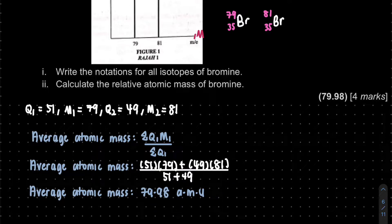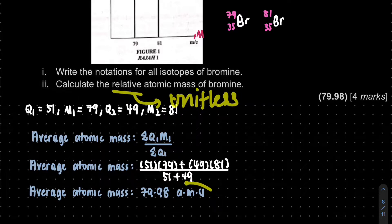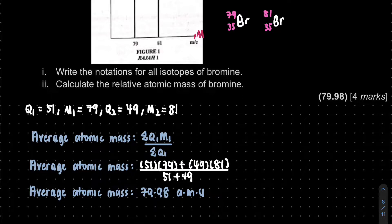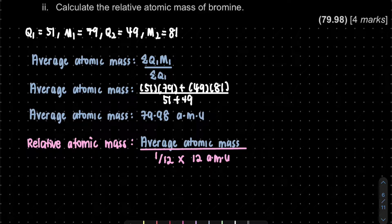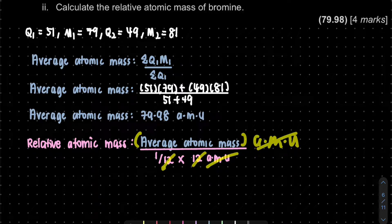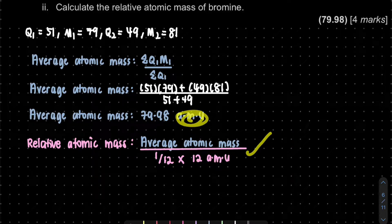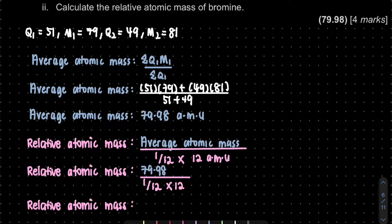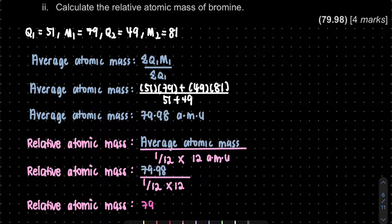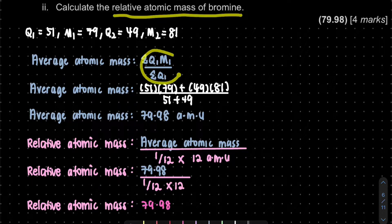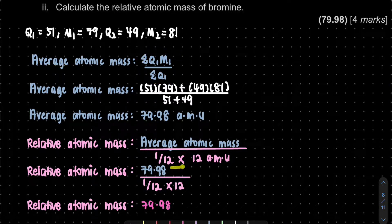This is not the end yet — the question asks for the relative atomic mass. Relative means it is unitless. To convert, we divide the average atomic mass by (1/12 × mass of carbon-12 in AMU), which cancels out the AMU units and the 12s. The relative atomic mass is therefore 79.98.